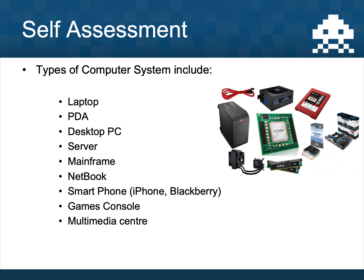Here are the different types of computer system I could come up with: a laptop, a PDA, a desktop computer, a server, a mainframe, a netbook, a smartphone, a games console, and a multimedia centre. So things like a PlayStation 5 or an Xbox definitely count, an iPhone or Android smartphone definitely counts, a laptop, Chromebook, netbook, or desktop tower computer all count too. Pause the video and add any that you didn't get in red.